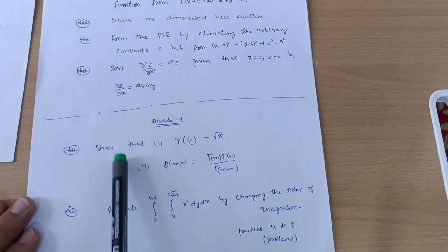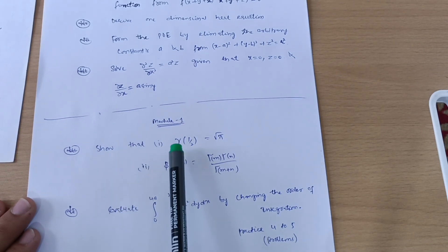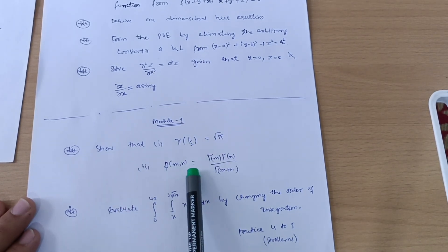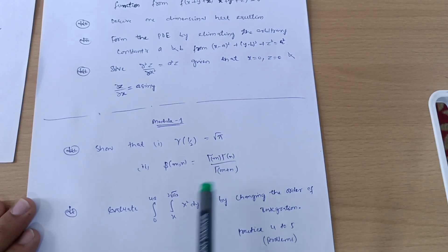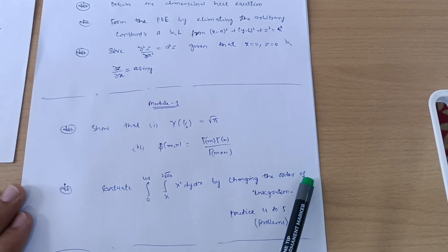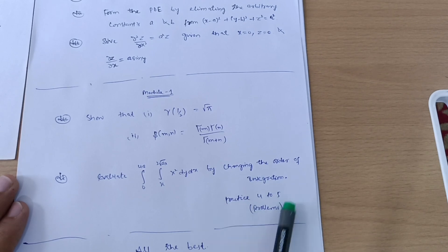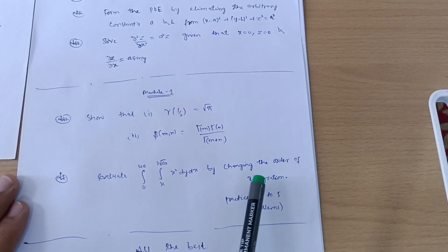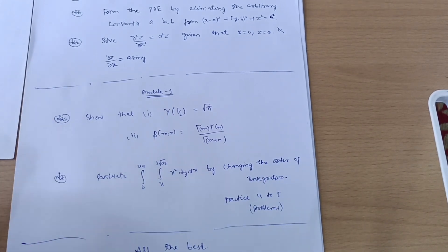Next is Module 1. Take two questions: one is the derivation — Γ(1/2) = √π, and β(m, n) = Γ(m)Γ(n) / Γ(m + n). Also evaluate by changing the order of integration. Practice four to five problems on changing the order of integration. If you take these two questions, I am guaranteeing you can easily pass the mathematics subject with flying colors.